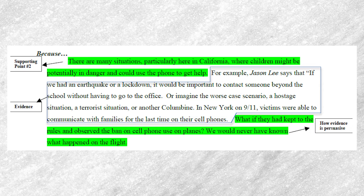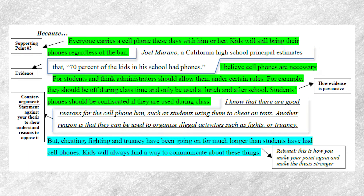They follow that up with their second reason: there are many situations, particularly here in California, where children might be potentially in danger and could use the phone to get help. They go on to talk about earthquakes and things like that in their evidence. Their next point is that cell phones are necessary to help with real-world emergencies — similar to the first point, but distinct enough to work. Their point number three says everyone carries a cell phone these days, and kids will still bring their phones regardless of the ban. They're essentially saying it's impossible to fight against the tide, since there's no concrete way to actually ban something as small as a cell phone when somebody could still keep it hidden.